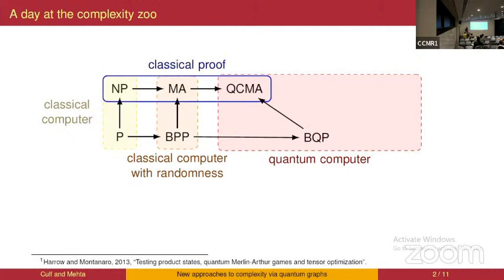These can be augmented with classical proofs, where a prover gives an extra classical piece of information. For a yes instance, this proof should help the verifier confirm it's a yes instance, and in a no instance, no proof should fool the verifier into thinking it's a yes instance with high probability. This gives the classes NP classically, MA for randomized classical, and QCMA for quantum with classical proofs.